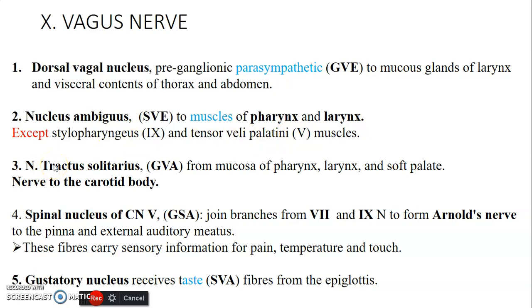Then we have nucleus tractus solitarius. This is general visceral afferent sensation — from the larynx and soft palate, as well as the nerve to the carotid body.